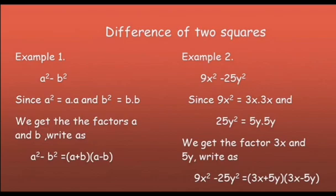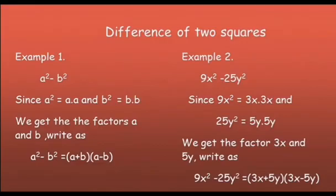Example number 2: 9x squared minus 25y squared. Since 9x squared equals 3x times 3x, and 25y squared equals 5y times 5y, we get the factors 3x and 5y, and write 9x squared minus 25y squared equals the quantity 3x plus 5y times the quantity 3x minus 5y.